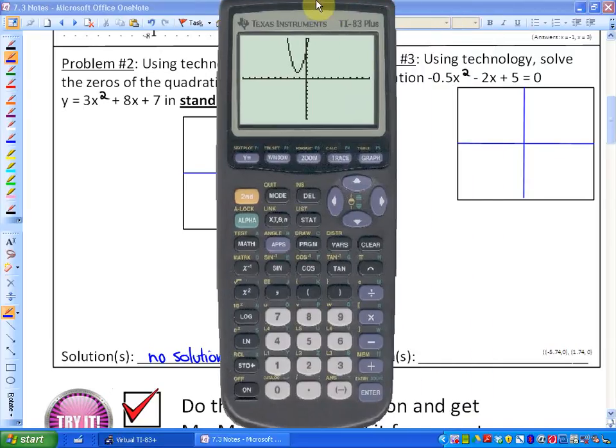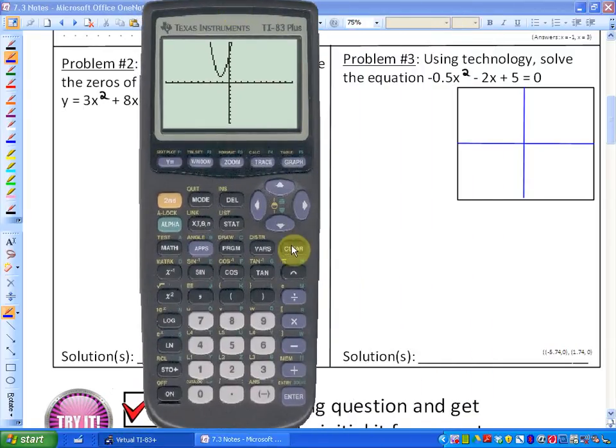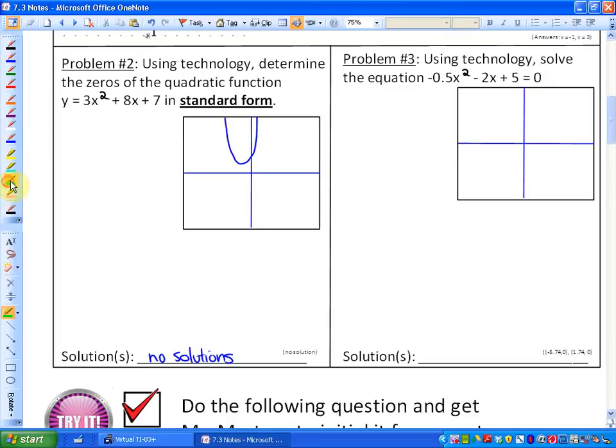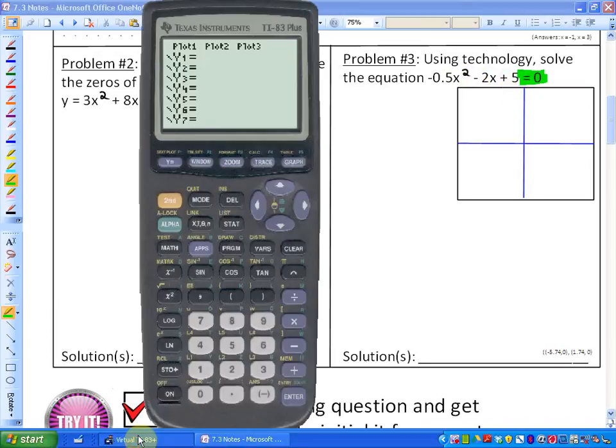Let's jump into the next one. And again, you may want to pause this video at some point in time and try it yourself. So the next one says, using technology, solve the equation -0.5x² - 2x + 5 = 0. So a little bit of a different question, but really what it's asking you is what values of x make this function equal zero. So even though it's not saying determine the zeros, it says equal zero. So I want to know the values of x that make this function equal zero, or in other words, the values of x that make y equal to zero. So it's exactly the same question just stated in a different way. So again, you may want to pause this video and try graphing this yourself and answering the question yourself.